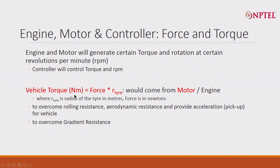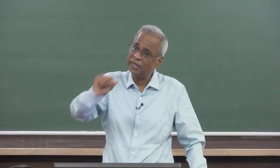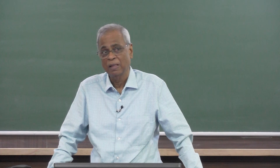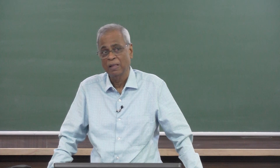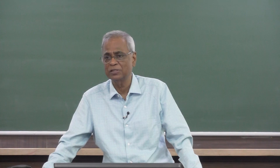Vehicle torque is measured in Newton meters. Newton is the force, and meter comes from the radius — it is force times the radius of the tire. This means if you use a bigger tire, for the same force you get larger torque; if you use a smaller tire, you get less torque. This torque comes from the motor or engine, where the tire radius is in meters and force is in Newtons.